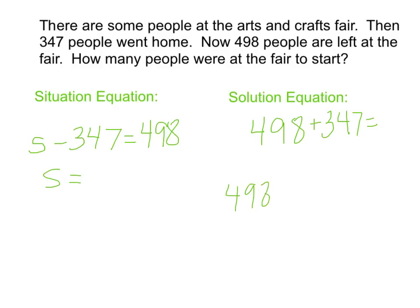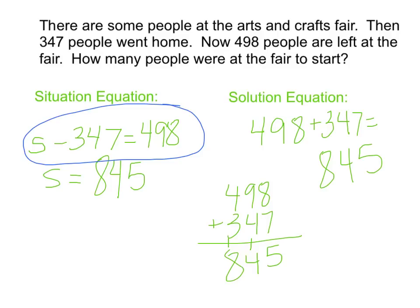And again, one last time, here's me working vertically. And it looks like there were 845 people at the start of the Arts and Crafts Fair. On the situation side, that would mean s equals 845. Again, sometimes that situation equation looks very similar, but sometimes it can look quite different. Both do a job of helping us understand the math involved and come to a solution.